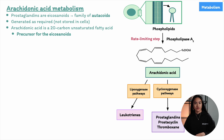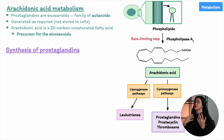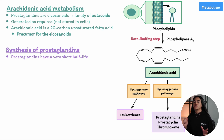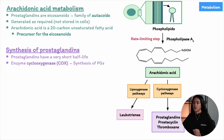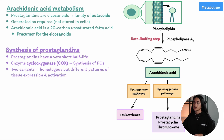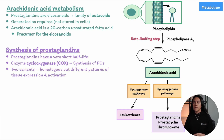Prostaglandins are special mediators that are produced only when needed. They don't last long in the body because they have a very short half-life, meaning their effects are localized to the site where they're produced rather than spreading throughout the body. The key enzyme responsible for making prostaglandins is called cyclooxygenase, or COX. There are two main variants: COX-1 and COX-2. These are isoforms of the same enzyme — highly homologous with lots of structural and sequence similarities — but they differ in where and when they are expressed.